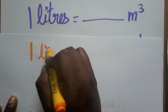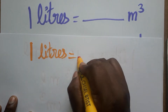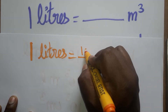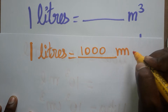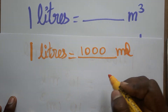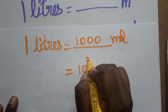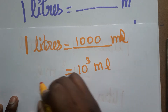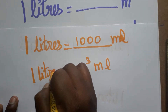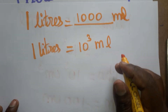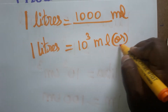One liter is equal to one thousand ml — already we know this, it's very simple. So one thousand we can write as ten power three ml. So one liter is equal to ten power three ml.